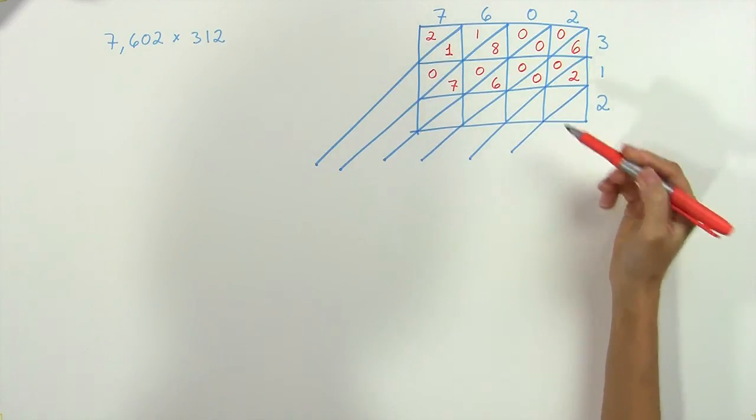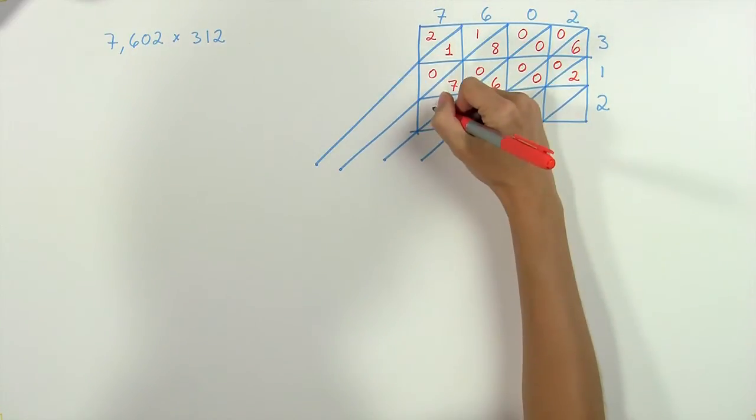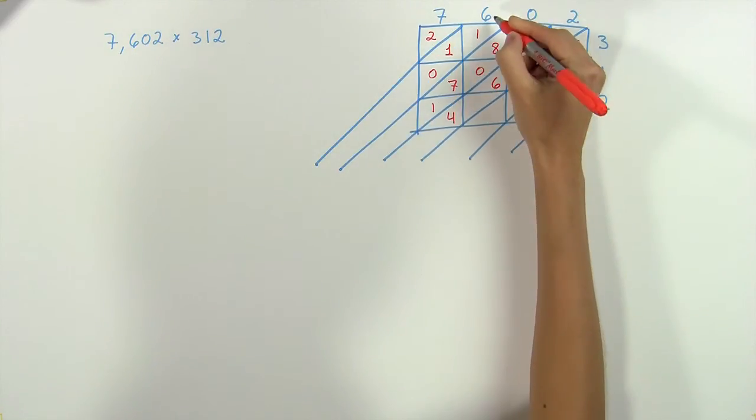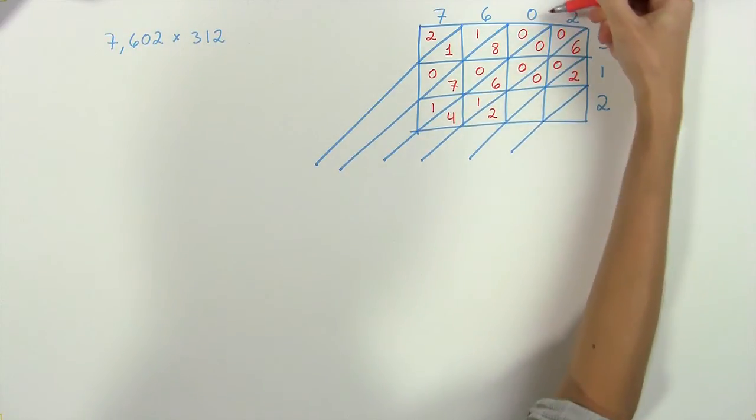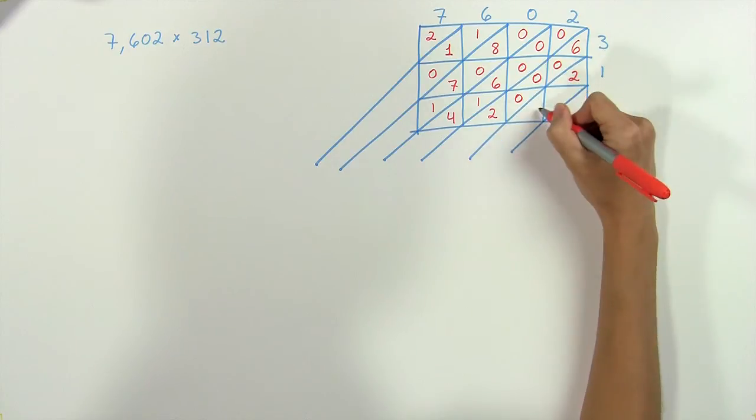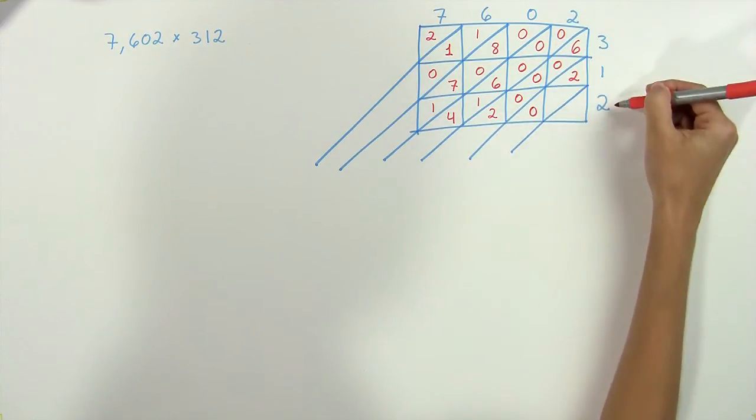And finally our third row is seven times two is fourteen. Six times two is twelve. Zero times two is zero. And two times two is four.